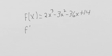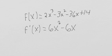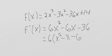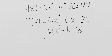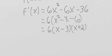Now let's try another function. We find the derivative: 3 times 2 gives 6x², then minus 6x, and the derivative of 36x is 36. The derivative of 14 is 0. We factor out a 6 to get 6(x² - x - 6), and then factor that to get 6(x - 3)(x + 2), which tells us the derivative is 0 at x = -2 and x = 3.